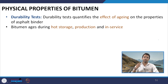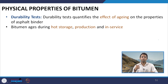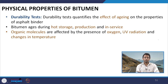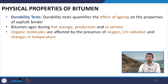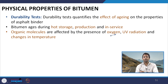It ages during hot storage, during production when it is mixed at elevated temperature with the aggregates, and after compaction in the field when the pavement is open to service. During aging, the organic molecules of bitumen get affected by oxygen, UV radiation, and changes in temperature. Oxidation — the reaction with oxygen — is the most important factor contributing to the aging of bitumen.